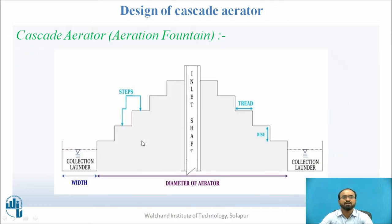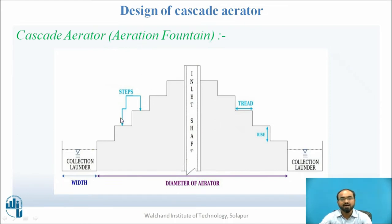This is the typical diagram of the aerator where you can see the inlet shaft is provided in the middle. These are the steps — this is the tread and this is the rise of each step. This is the collection launder. There are two collection launders if you cut by cross section, and that is why whenever we are designing the collection launder, we divide the discharge into two, because whatever discharge is coming in is divided into half.